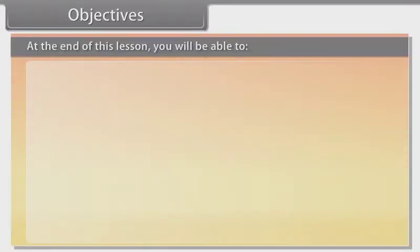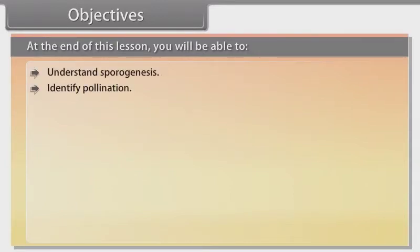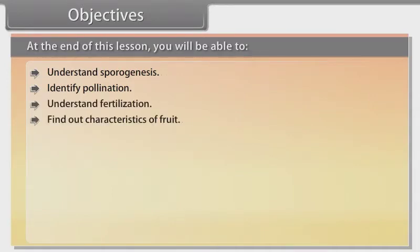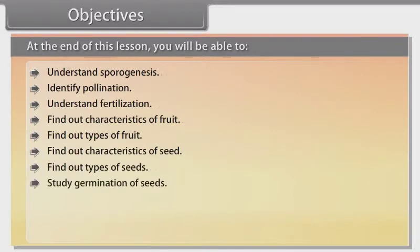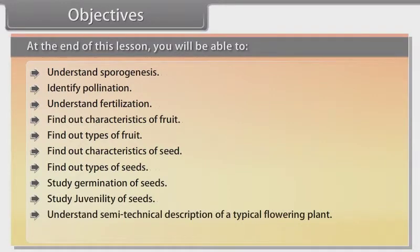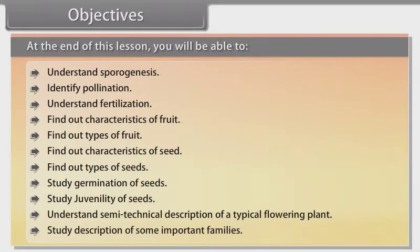At the end of this lesson you'll be able to understand sporogenesis, identify pollination, understand fertilization, find out characteristics of fruit, find out types of fruit, find out characteristics of seed, find out types of seeds, study germination of seeds, study juvenility of seeds, understand semi-technical description of a typical flowering plant, and study description of some important families.